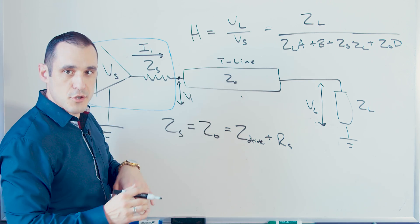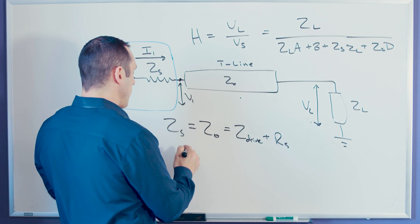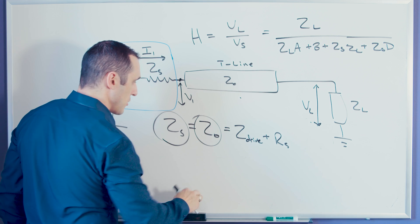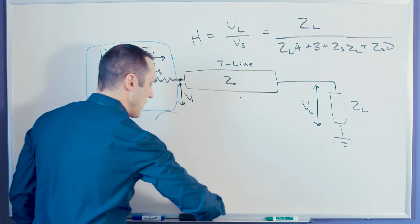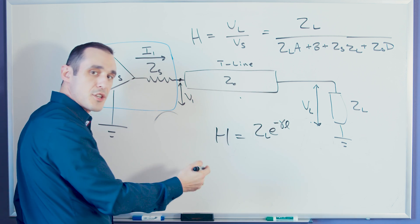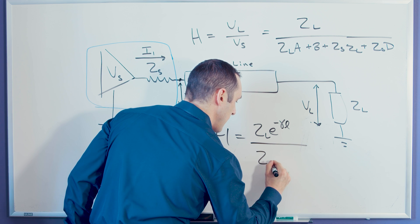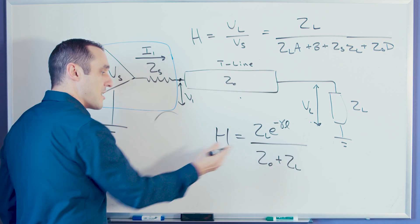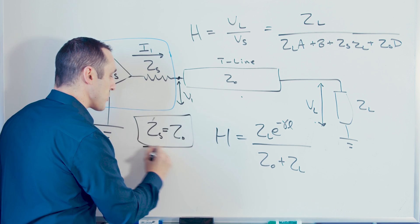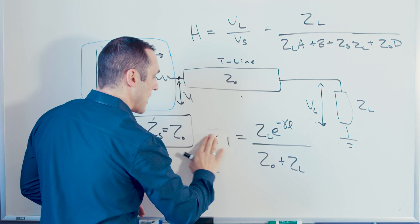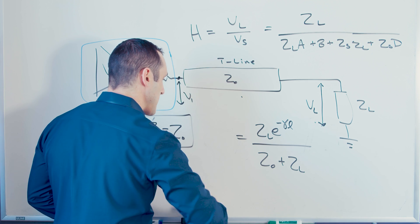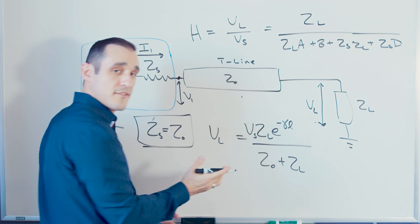So if we do this, what happens to the transfer function? When we plug in Z sub S equal to Z sub zero, along with Z sub L, the transfer function equals the load impedance times an exponential factor representing attenuation and propagation, divided by the sum of Z sub L and Z sub zero. This is specific to the case where Z sub S equals Z sub zero, and it tells us the load impedance relative to the source impedance.